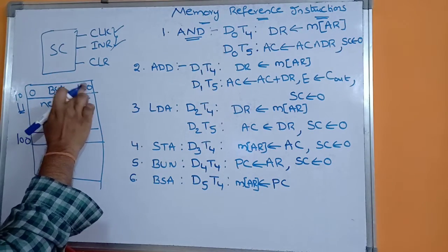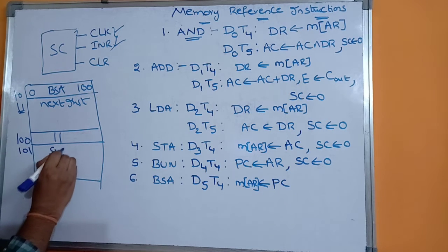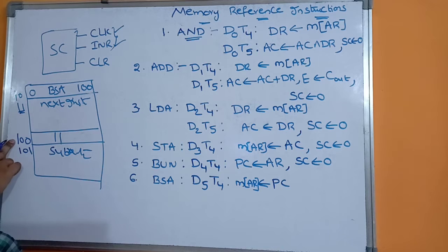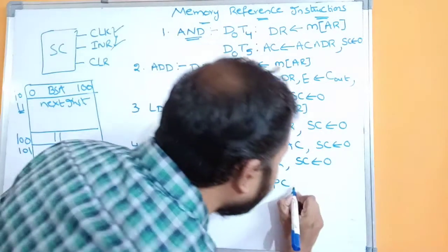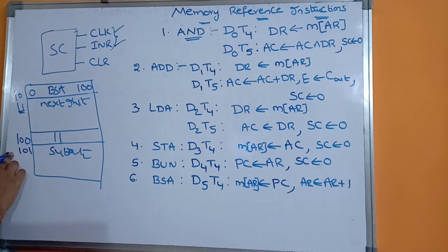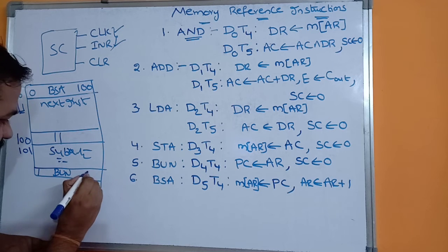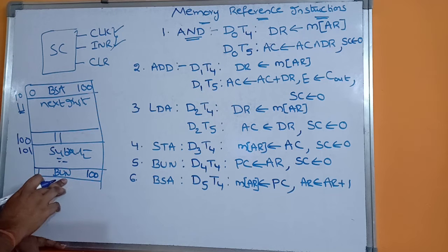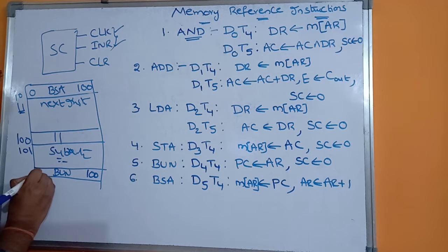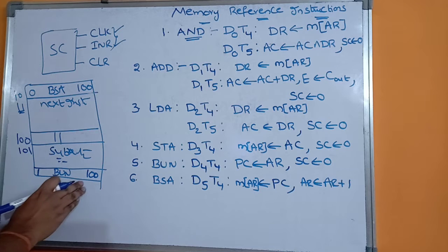The address register here is 100. We store the program counter value 11 into M of 100. The subroutine is available from address 101 onwards. To get from 100 to 101, we increment the address register: AR plus 1 goes to AR, so AR becomes 101. All the instructions in the subroutine are then executed. Assume the last instruction of the subroutine is BUN with indirect bit 1 and address field 100. The 1 (indirect bit) means it is an indirect address.